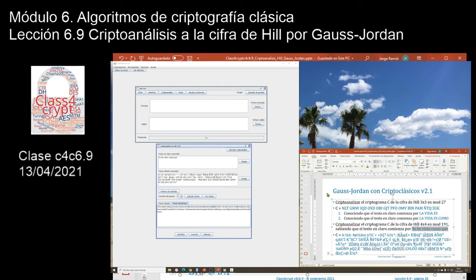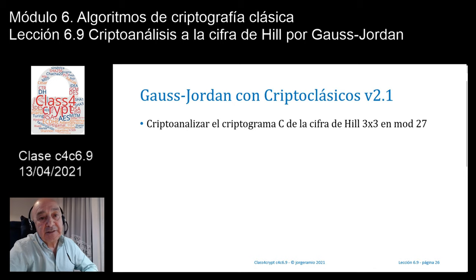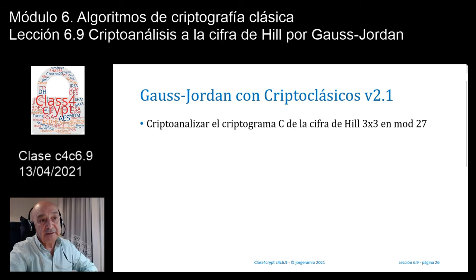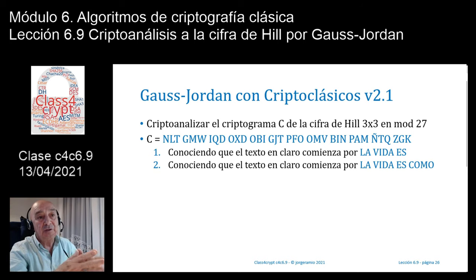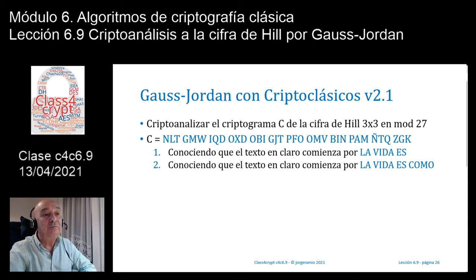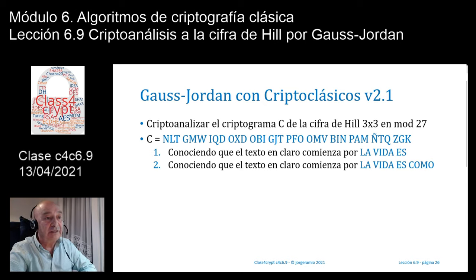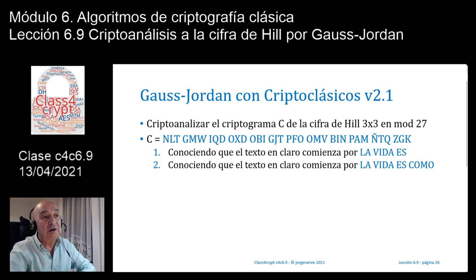En resumen, hemos visto cómo es muy sencillo hacer un ataque de Gauss-Jordan, por muy complicado que pareciera el sistema. Incluso matrices de 4×4 en módulo 191 —con un espacio de claves de casi 2⁵⁰⁰— son vulnerables al ataque de texto en claro conocido. El criptoanálisis de Gauss-Jordan requiere como mínimo tantos caracteres de texto en claro conocido como elementos tenga la matriz. Esto lo hemos demostrado tanto en la teoría como con el software CryptoCasicos.